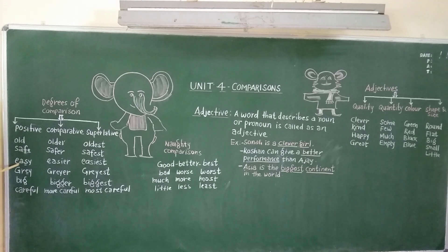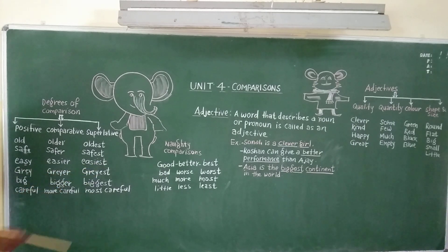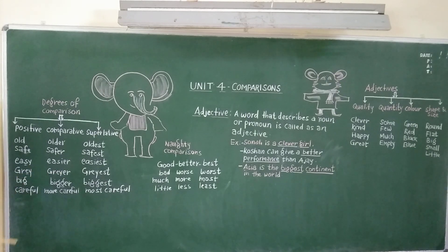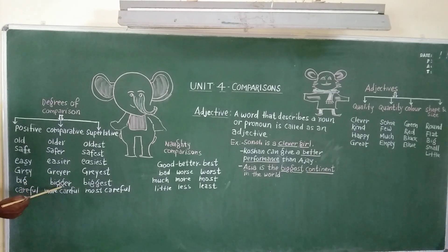In the same way, if Y is there at the end of the word, and before Y there is a consonant, then we use IER in comparative degree and IEST in superlative degree — for example, easy, easier, easiest. If the word ends with Y and before that there is a vowel, then we add just ER in comparative degree and EST in superlative degree — for example, grey, greyer, greyest. And for short words, we double the consonant: big, bigger, biggest — here we double G and add ER in comparative degree and EST in superlative degree.